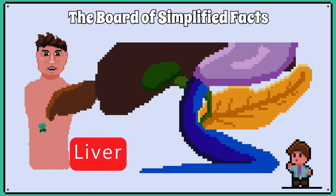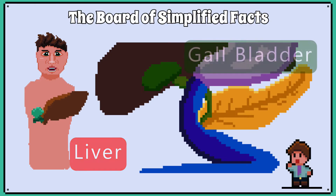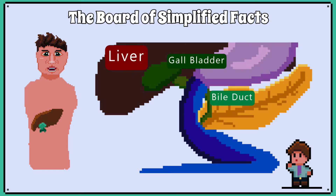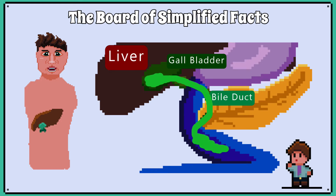The liver secretes bile into the gallbladder. The gallbladder acts as a reservoir, ready to release bile into the small intestine via the bile duct when food enters the small intestine. We will cover the role bile plays in a later video.